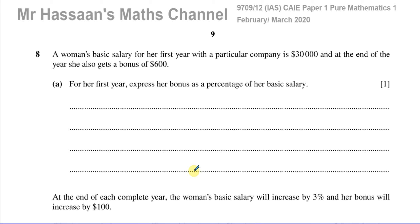Here we have a question about arithmetic and geometric series. The first part tells you about a woman whose basic salary for her first year with a particular company is $30,000. At the end of the year, she also gets a bonus of $600. For her first year, express her bonus as a percentage of her basic salary.